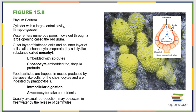We begin our discussion with phylum Porifera — the sponges. They have a cylindrical body with a large central cavity known as the spongocoel. Water enters through numerous pores on the outside and flows out the top through a large opening called an osculum. The outer layer has flattened cells, and an inner layer of cells called choanocytes. Those two layers are separated by a jelly-like mesophyll in the middle, which is embedded with spicules — tiny proteins that give the sponge structure and rigidity. The choanocytes have flagella that protrude into the inner surface of the sponge.